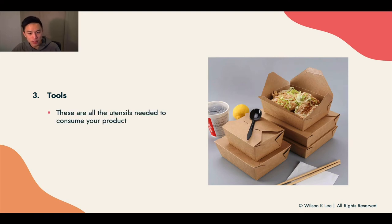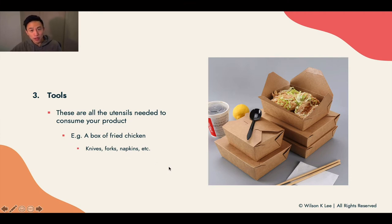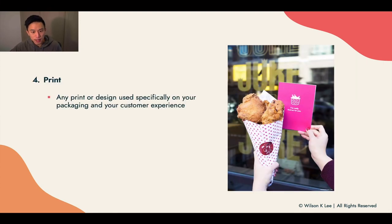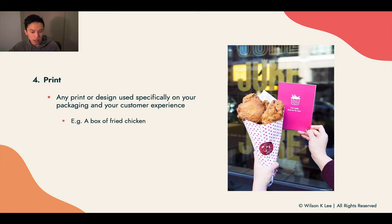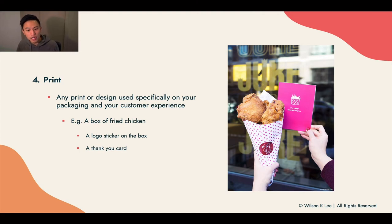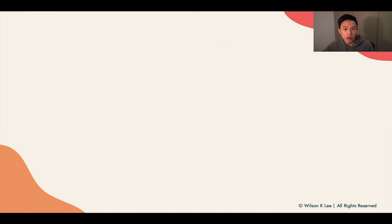The tools — these are the utensils and items you would include for people to consume your products. For example, a box of fried chicken comes with knives, forks, napkins, et cetera. For our Bulbasaur case study created specifically for this course, our mason jars and scoops are also part of our cost of goods sold. The prints — any prints or packaging designs that enhance your customer experience and that you plan on giving to customers are also part of your COGS. For example, a logo sticker on the side of the box and a thank-you card encouraging customers to leave a review.